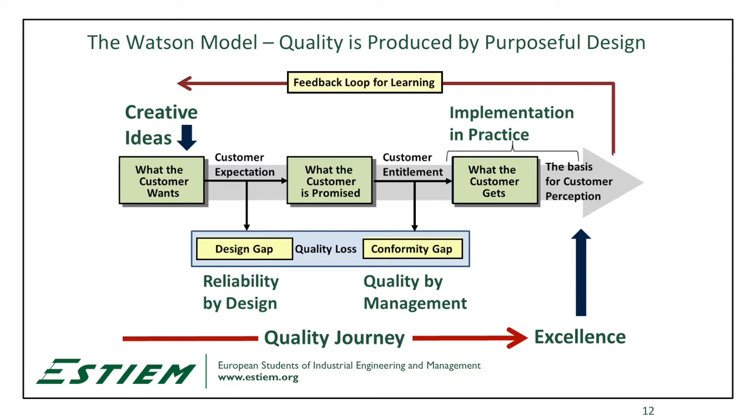The gap between the promise and what the customer gets is where we fall short. That's where people talk about wanting perfection — six sigma levels of service. Looking at all of these things together, quality is not just a definition. It's actually an objective we want to achieve through the purposeful design of a deliverable.